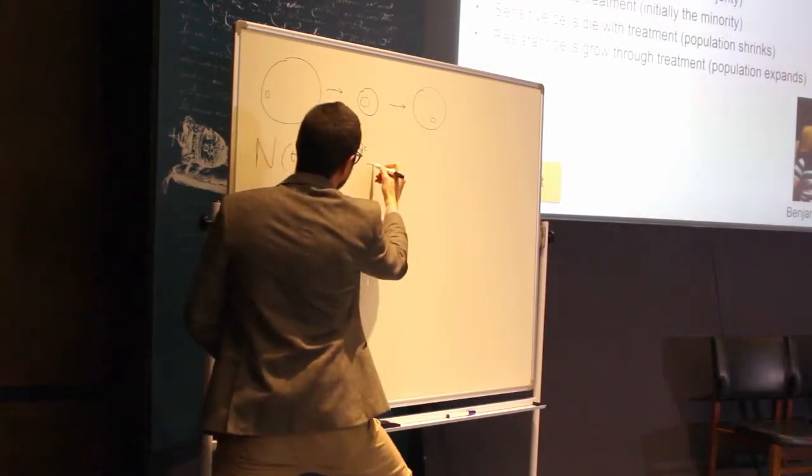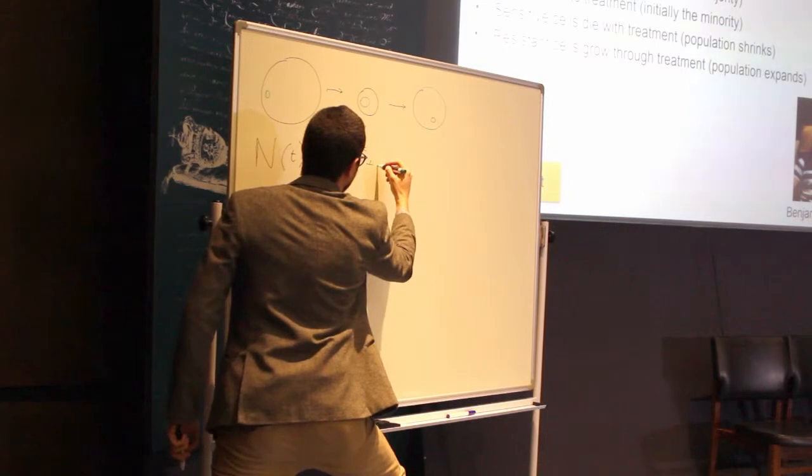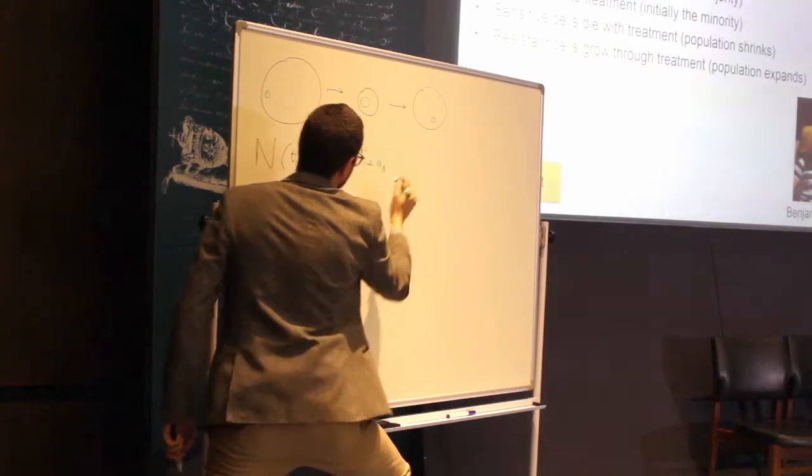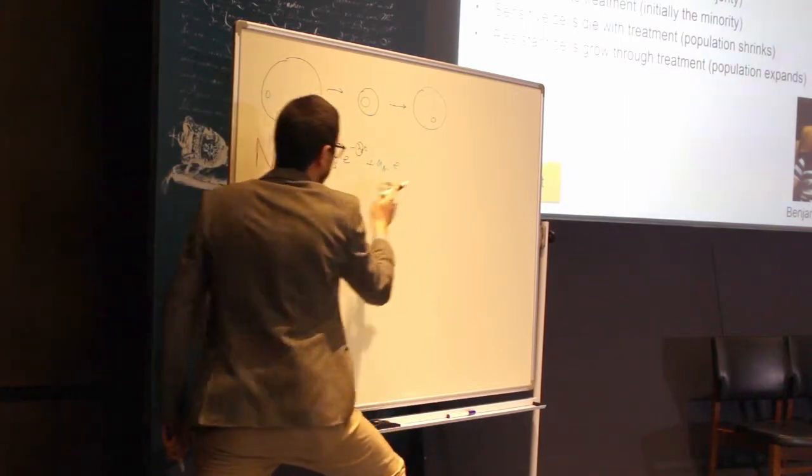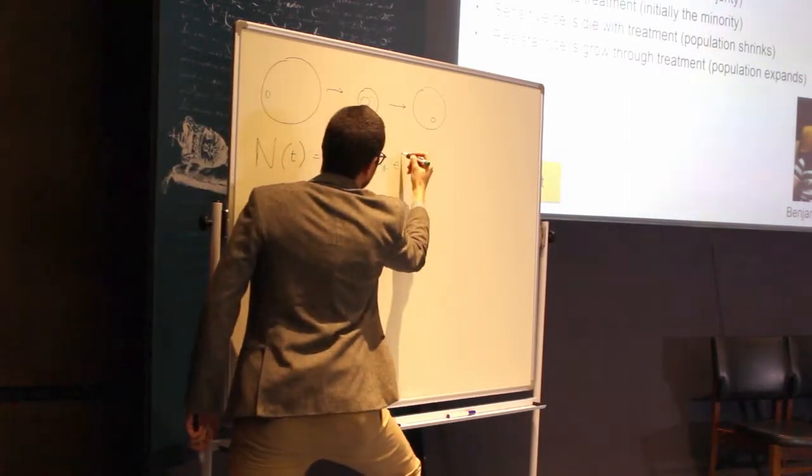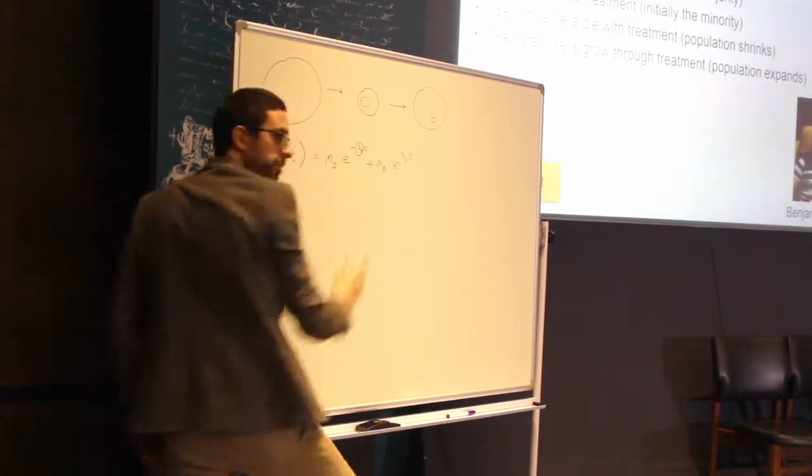But then there is a second factor, the other population, which are the resistant cells, which are originally a proportion N_r, which is much smaller than this. And these guys are actually growing through treatment. So their sign is positive. Lambda r t is actually a positive sign. So these guys are actually expanding.